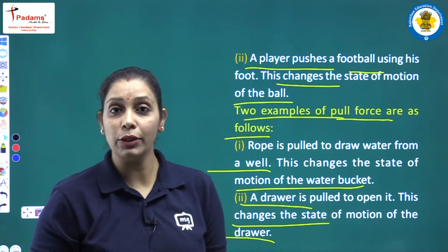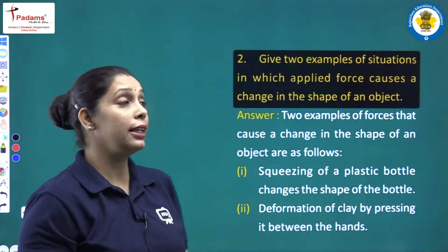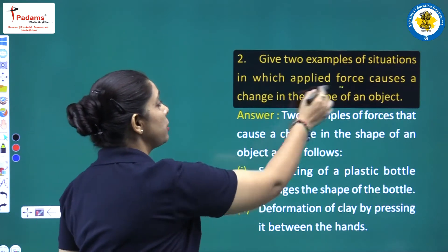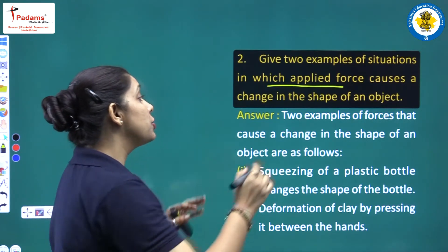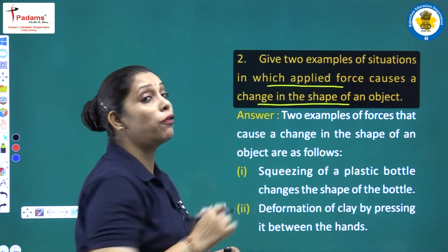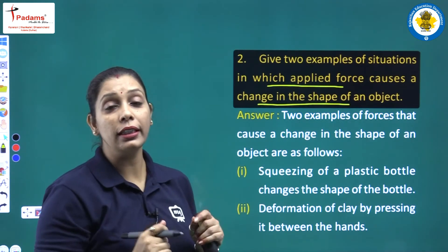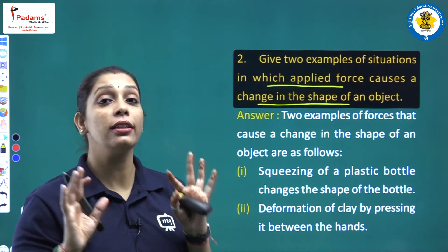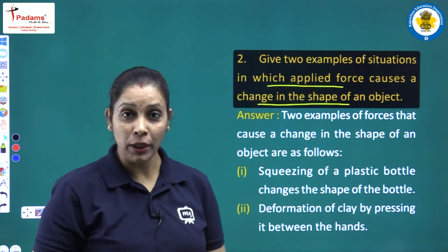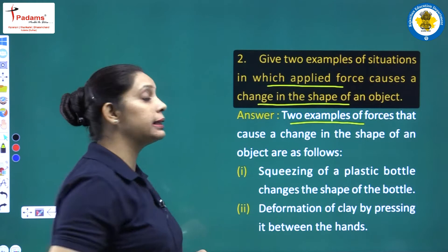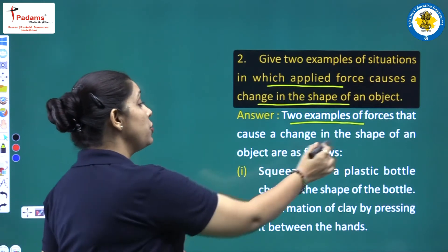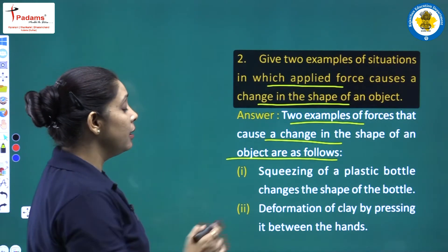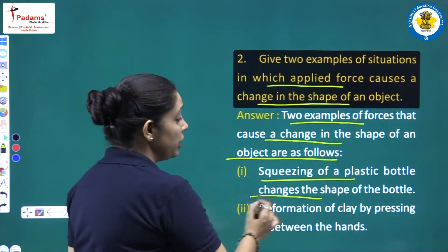Move to the next question. Question 2: Give two examples of situations in which an applied force causes a change in the shape of an object. In Question 1 there was a change in the state of motion of the object, and here there is a change in the shape of an object. The two examples of forces that cause a change in the shape of an object are as follows.